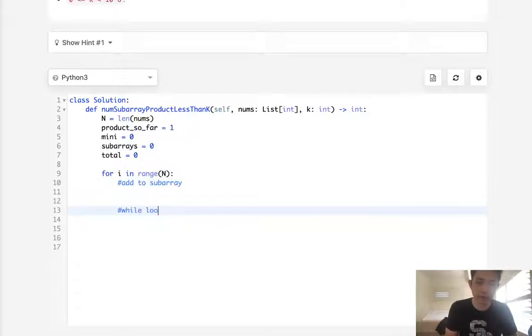So while loop to increase mini and decrease subarrays. Finally, if we find that this product so far is less than k, then we could add whatever total subarrays to our total. So add subarrays to total.